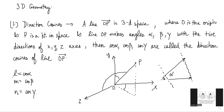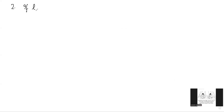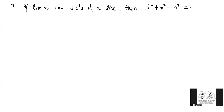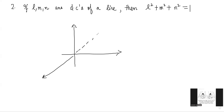You can prove by Pythagoras theorem that L² + M² + N² is always equal to 1. If you drop a perpendicular from P to the zx-plane, and the point is x, y, z with distance r from the origin, then cos alpha = x/r, cos beta = y/r, and cos gamma = z/r, because you can make right-angled triangles with each of the axis lines.